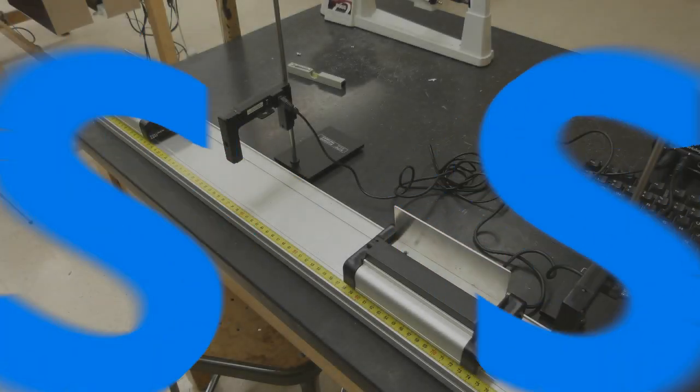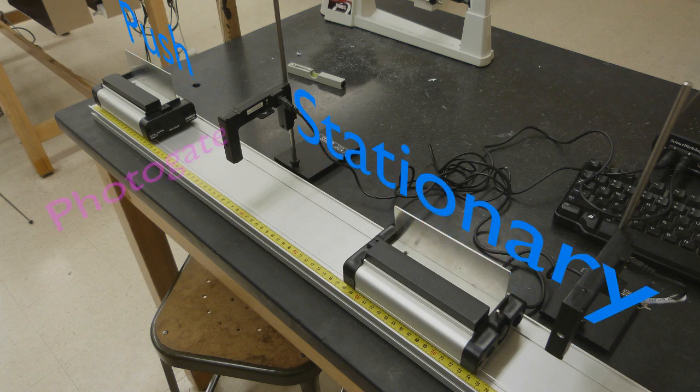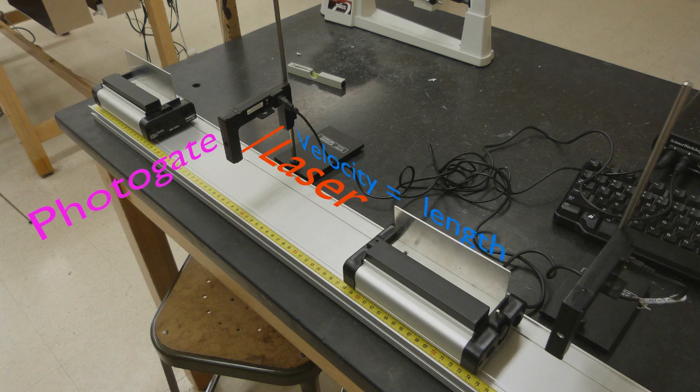We will always have a stationary cart. We will push a cart into it, and we'll use two photogates to measure the velocity of the carts. The laser will measure the amount of time the flag takes to pass the gate. The computer records times.